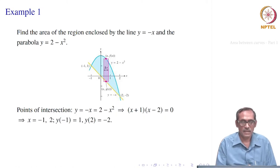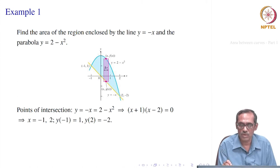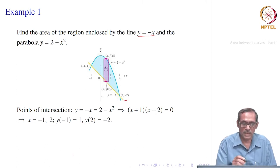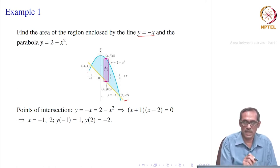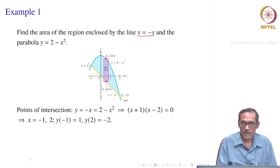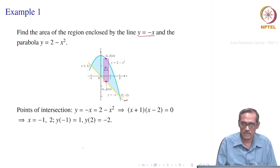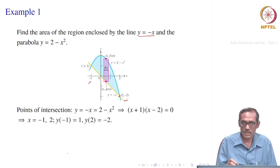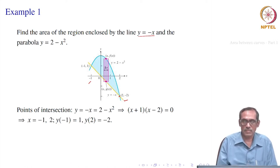Let us try one example: find the area of the region enclosed by the line y = −x and the parabola y = 2 − x². No bounding vertical lines are given, which means these two curves intersect at least at two points. To find the intersection points, we set −x = 2 − x², giving x² − x − 2 = 0, which factors as (x+1)(x−2) = 0. So the intersection points are x = −1 and x = 2, matching what the plot shows.